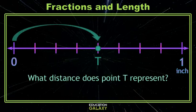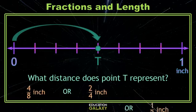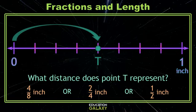Our point T is exactly in the middle between 0 inches and 1 inch, which means that you could say point T is at 4 eighths inch or 2 fourths inch or 1 half inch. Those fractions are equivalent, so any of those answers could be correct. Let's look at one more example.